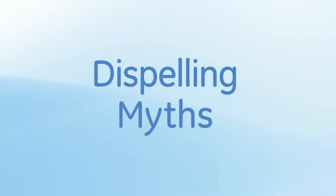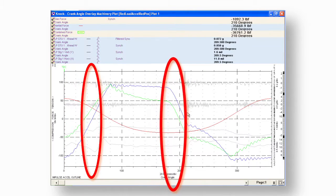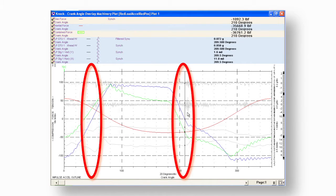There are misconceptions in the marketplace regarding our capabilities. One example is the misrepresentation of our ability to accurately correlate events with crank angle location, where the difference of just a few degrees can adversely affect a diagnosis.